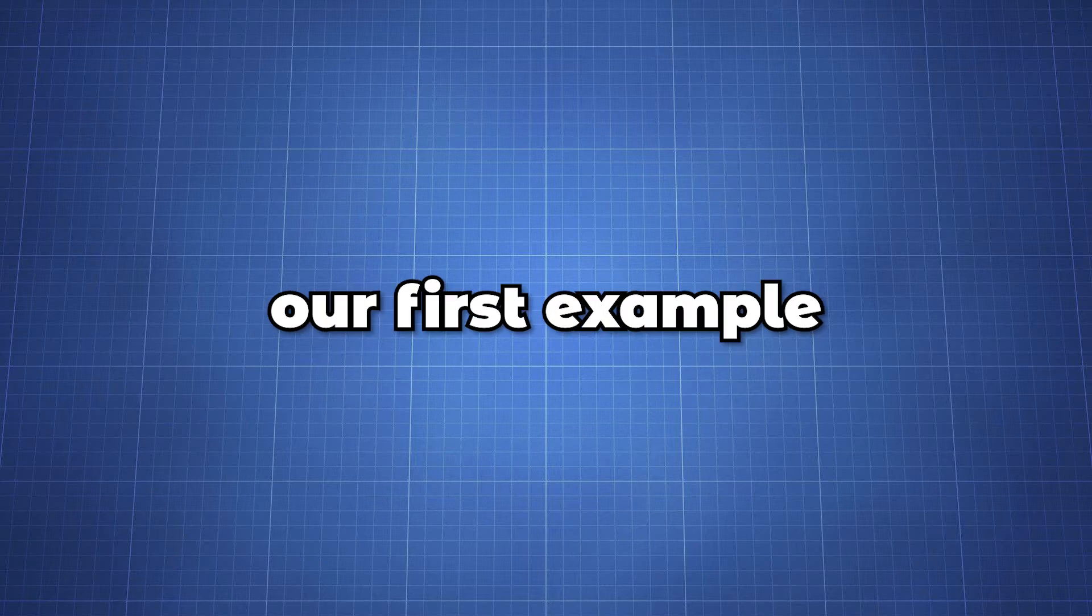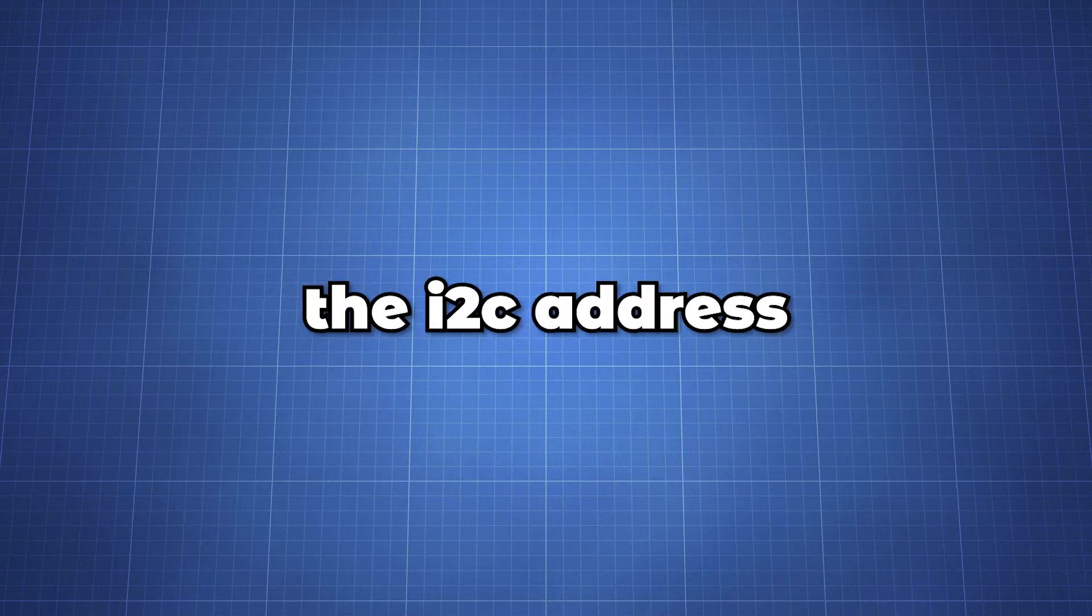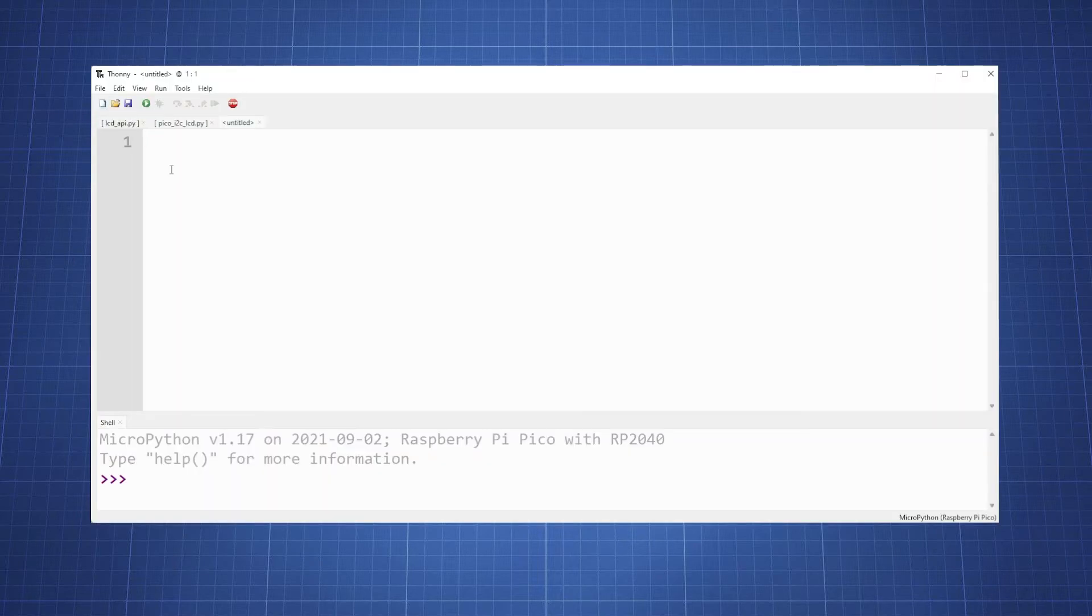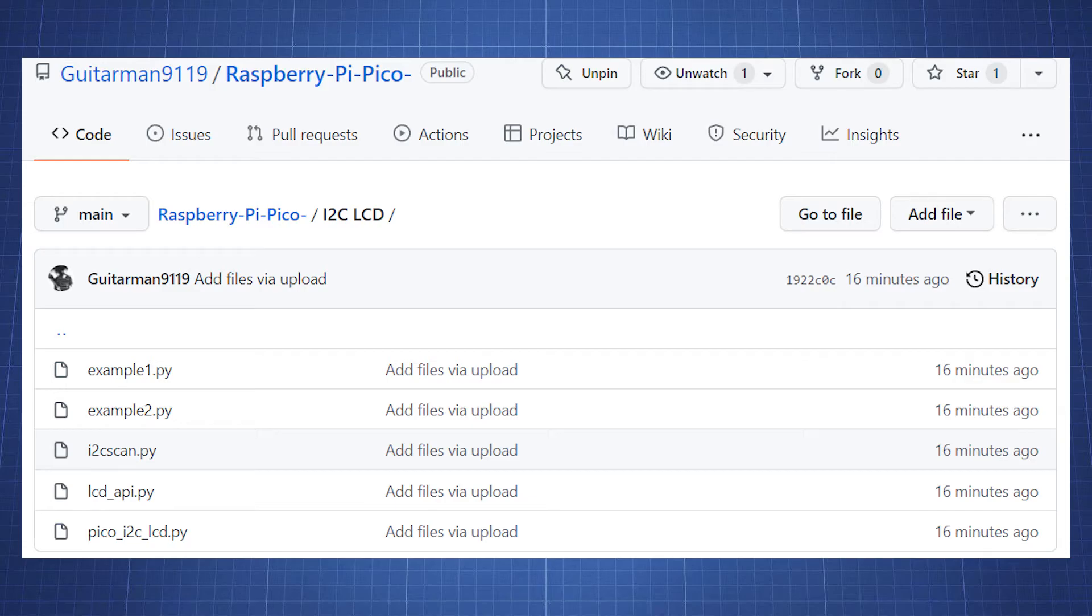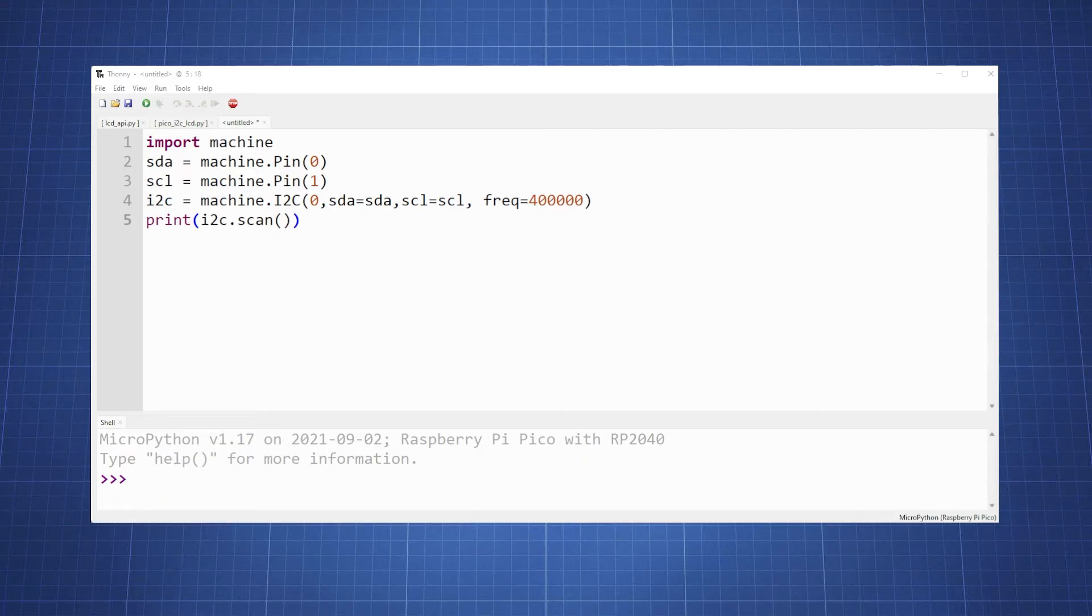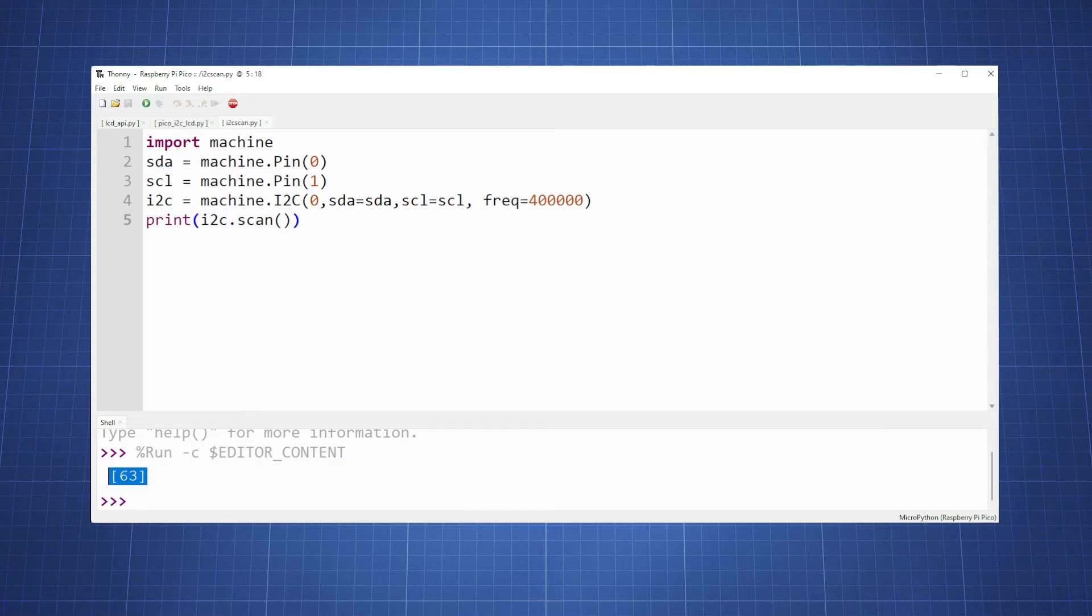Before we look at our first example we first need to know the I2C address. Create a new file and on my GitHub repository you'll find the program I2C scan. Copy this code and paste it. Now running this file will give you the I2C address. Take note of this as you will need it a bit later. In this case mine is 63.